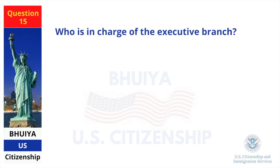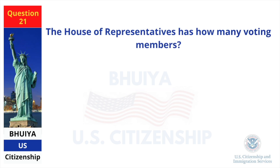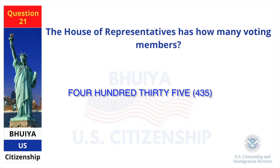Who is in charge of the executive branch? The President. The House of Representatives has how many voting members? 435.